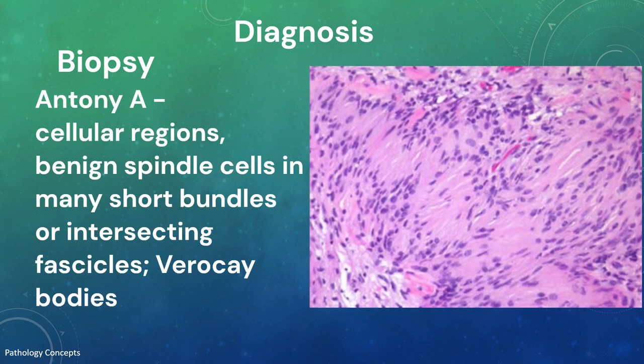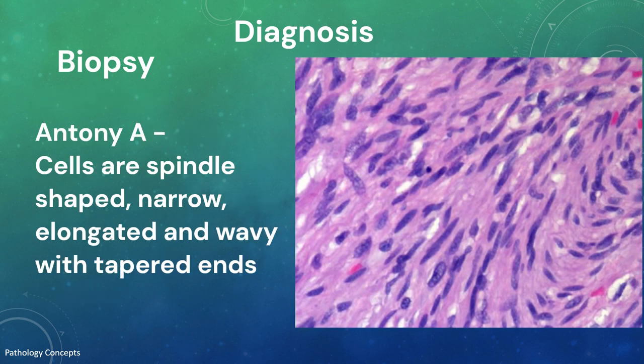Histologically, there are two distinct regions, also known as a biphasic pattern: Antoni A areas and Antoni B areas. Antoni A areas are the cellular regions with predominantly benign spindle cells in short bundles or intersecting fascicles. They may palisade around fibrillary processes called Verocay bodies. They are positive for S100 staining. The cells are narrow, elongated, and wavy with tapered ends.